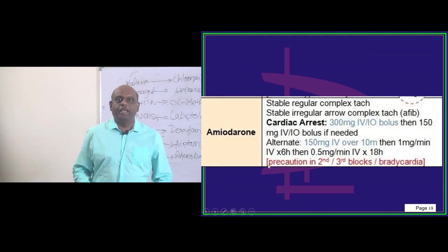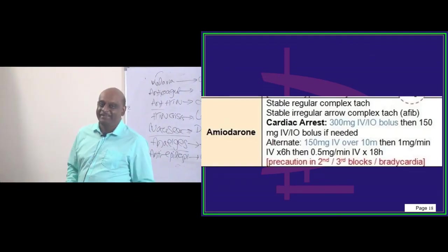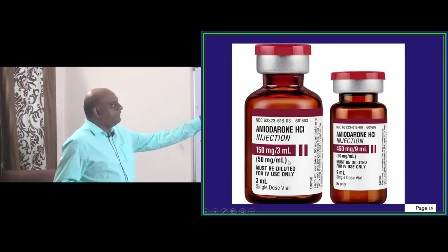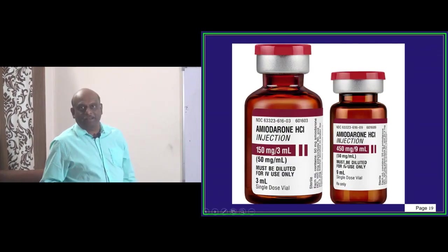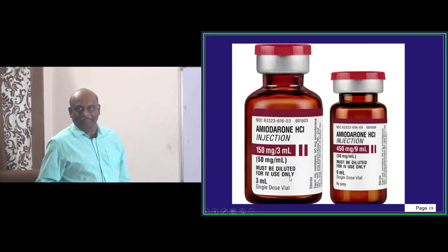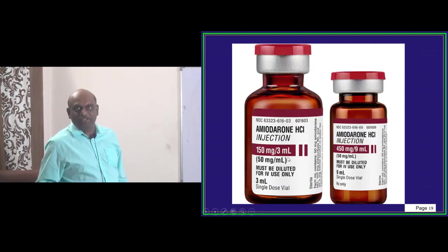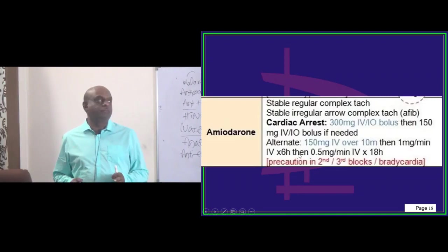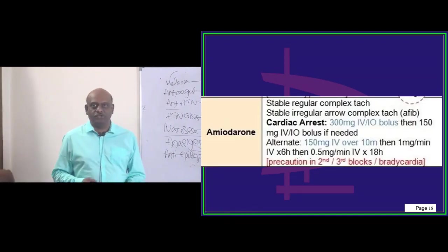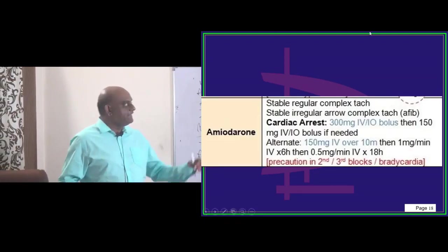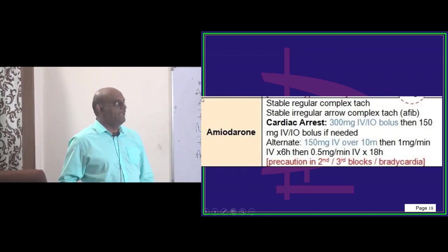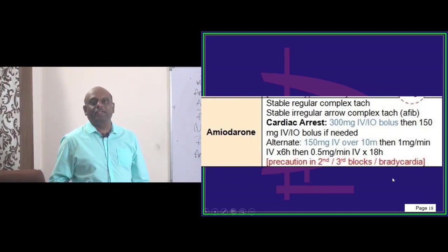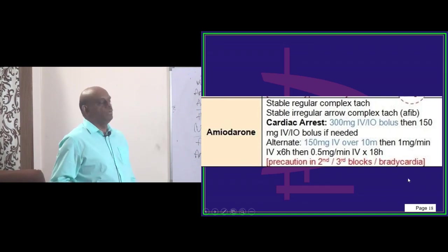Now comes amiodarone. So amiodarone comes in 150 mg per 3 ml or 450 mg per 9 ml composition, amiodarone injection. So amiodarone, if there is a cardiac arrest, you will be giving 300 mg IV and then 150 mg IV if needed you have to administer.